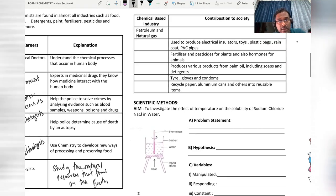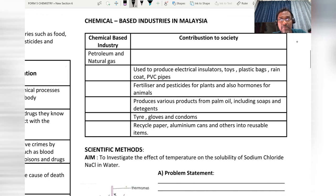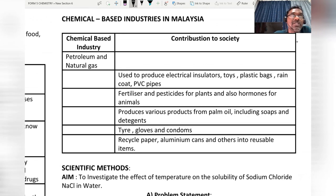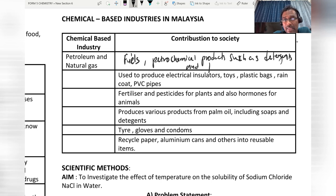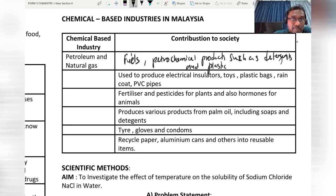Now I'll go through chemical-based industries. Number one is petroleum and natural gas — these contribute to society as fuels, and are also used to make petrochemical products such as detergent and plastic. The second is the petrochemical industry, which produces electrical insulators, toys, plastic bags, raincoats, and PVC pipes.